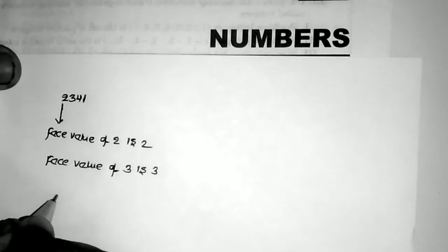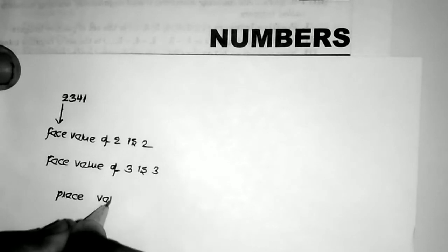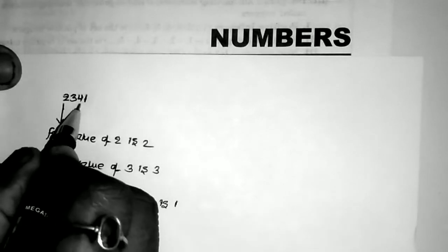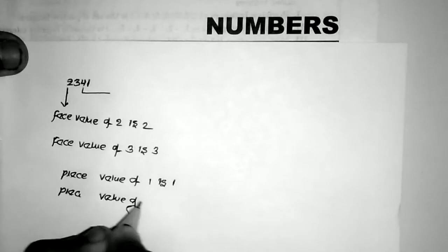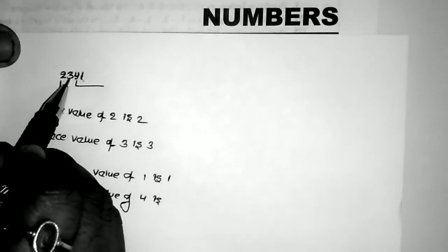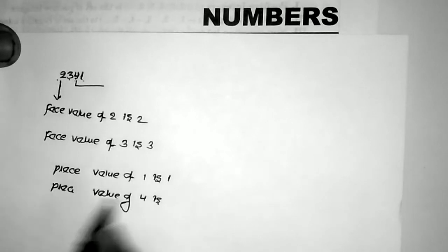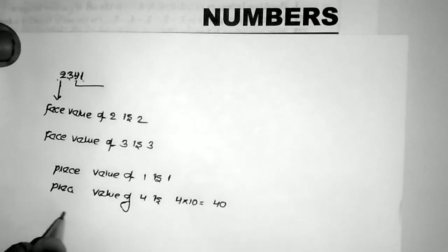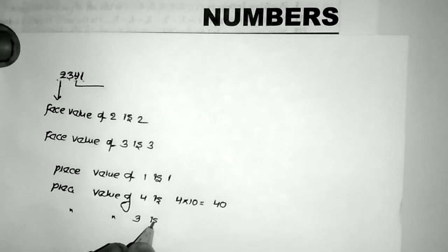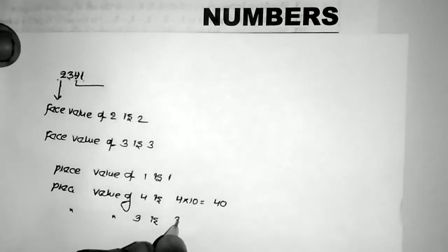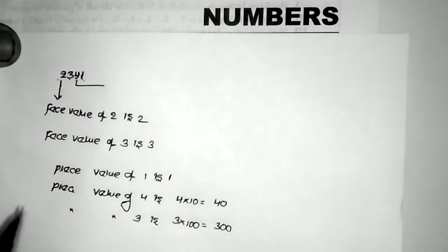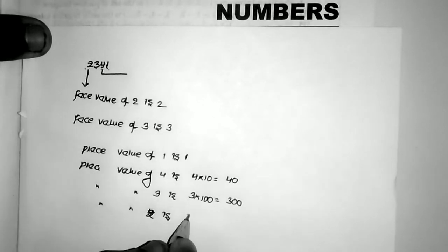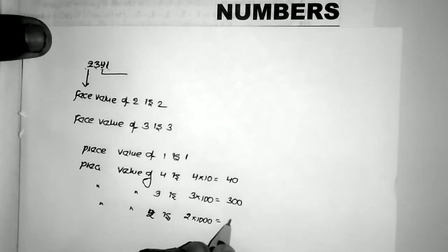Now what is place value? Place value of 1 is equal to 1 — it is in the units place. Place value of 4 is equal to 4 into 10, which is 40 — tens place. Place value of 3 is equal to 3 into 100, which is 300 — hundreds place. Place value of 2 is equal to 2 into 1000, which is 2000 — thousands place.